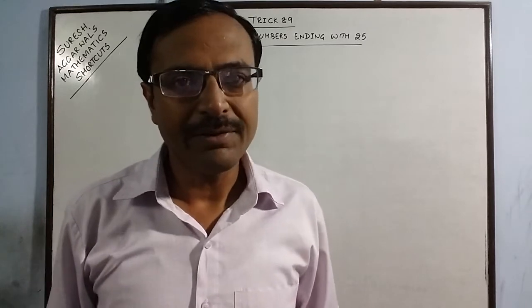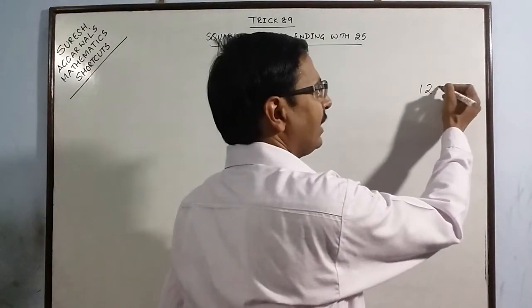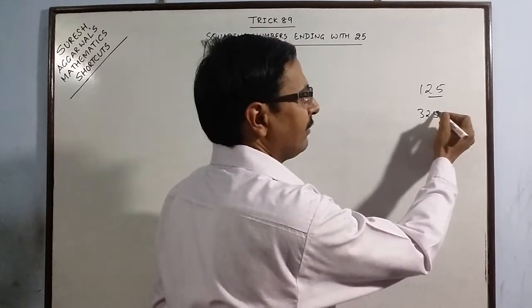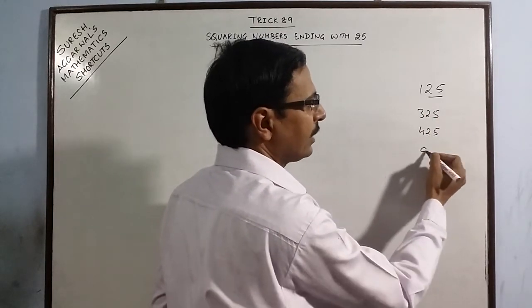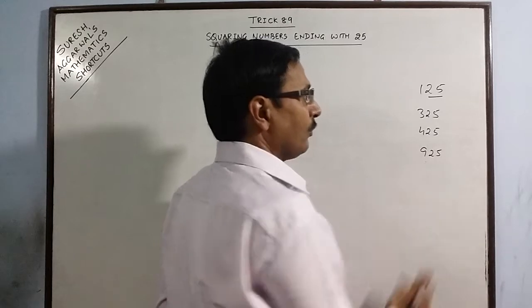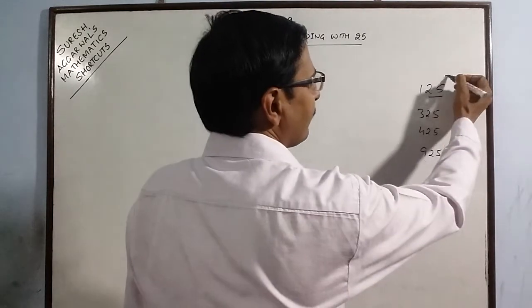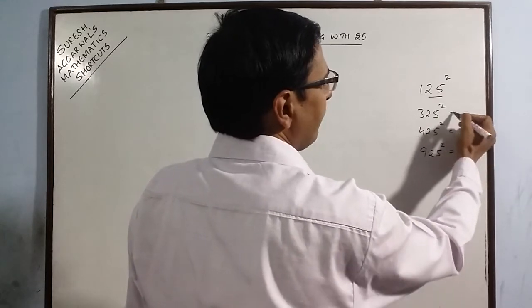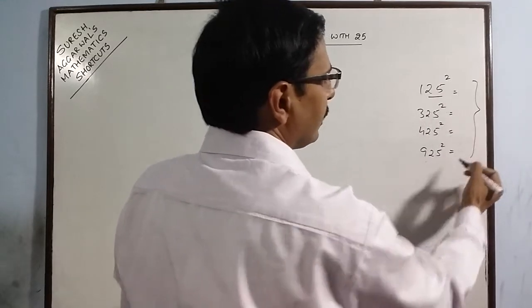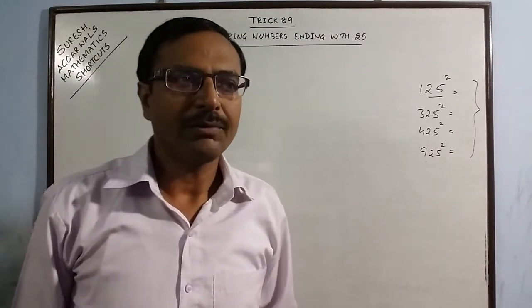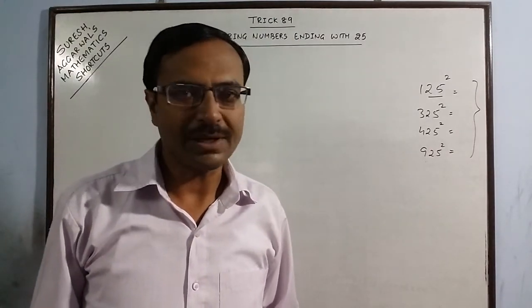Just like 125, you have 125 ending with 25 or you have 325 or 425, 925 and so on. Now we are going to do a method through which you can find the squares of all these numbers mentally without consuming too much time or we can say in a matter of 4 to 5 seconds only.